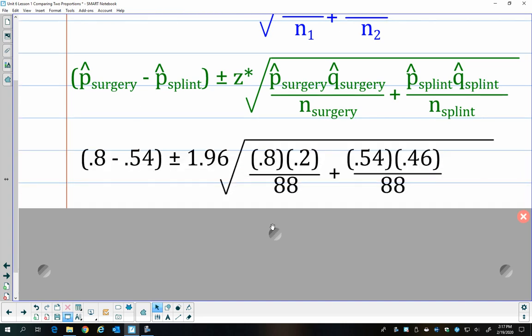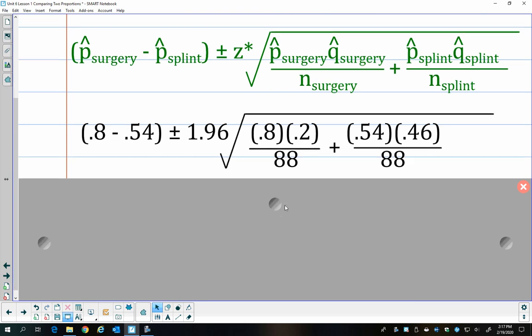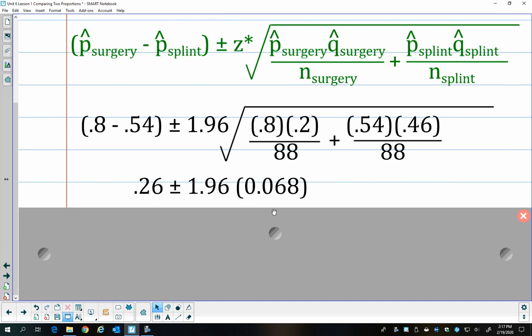So now I'm just going to plug in the values from the previous page. So I had all these on the previous page. That z-star we get the same way for 95% confidence is 1.96. If you need a refresher on how to find that, just ask in class and I can absolutely do that.